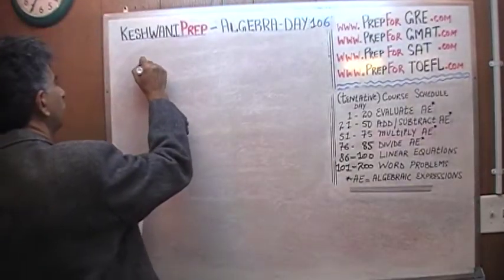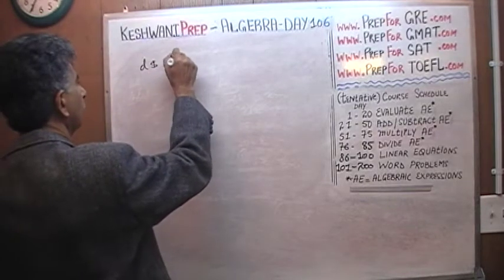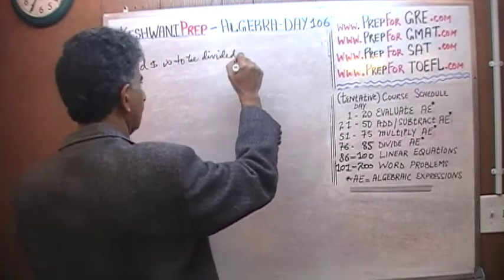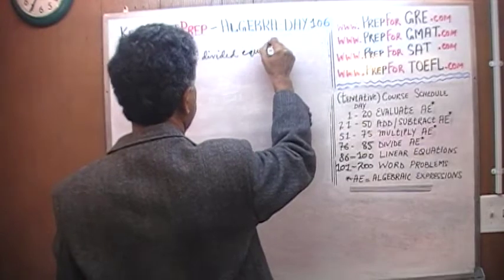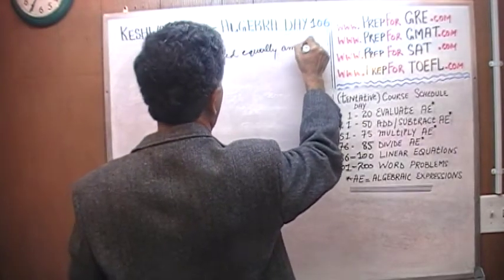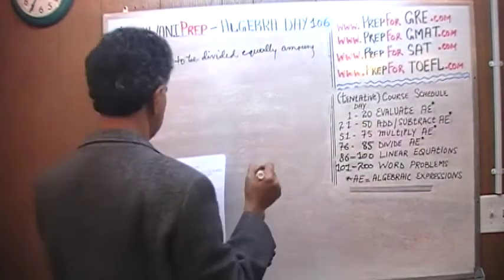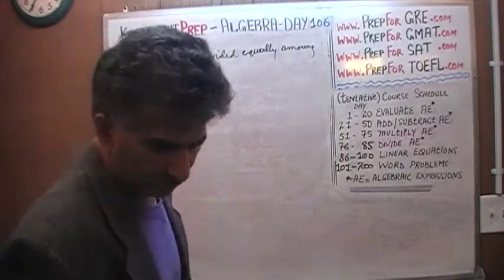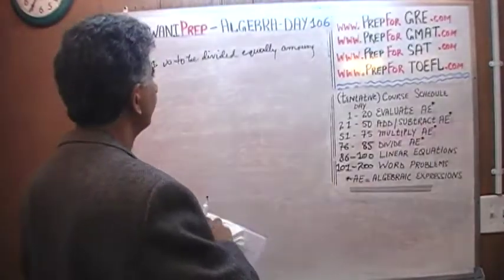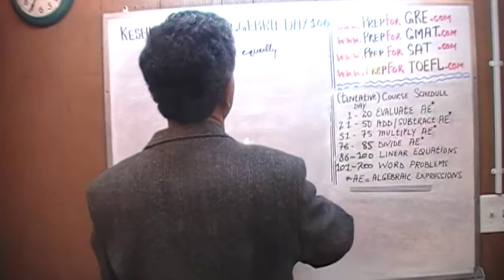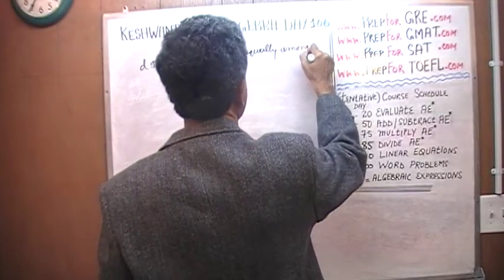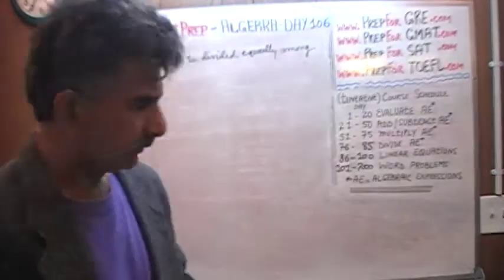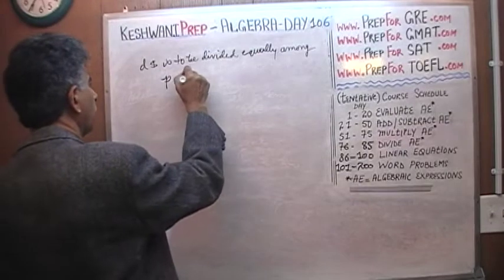Here's a question: D dollars is to be divided equally among—that doesn't look like the right spelling for among. How does one spell among? I'm not sure about the spelling. D dollars is to be divided equally among P people.